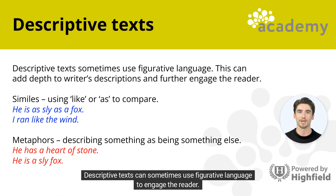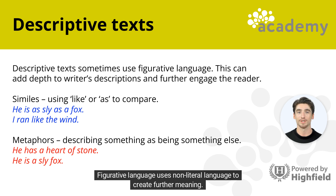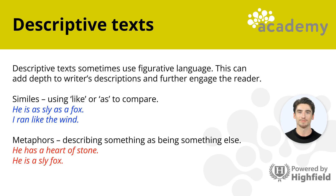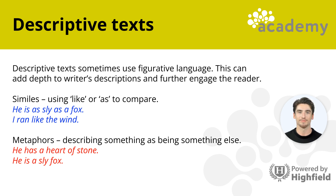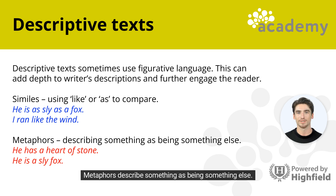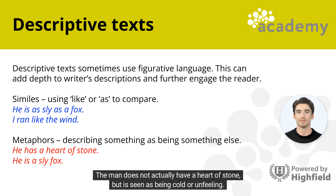Descriptive texts can sometimes use figurative language to engage the reader. Figurative language uses non-literal language to create further meaning, including similes and metaphors. Similes use 'as' or 'like' to compare one thing to another, creating imagery — for example, 'he is as sly as a fox.' Metaphors describe something as being something else — for example, 'he has a heart of stone,' meaning the man is seen as cold or unfeeling.